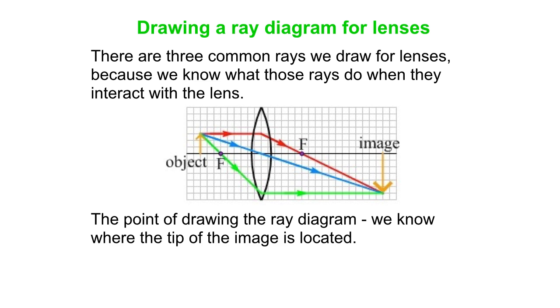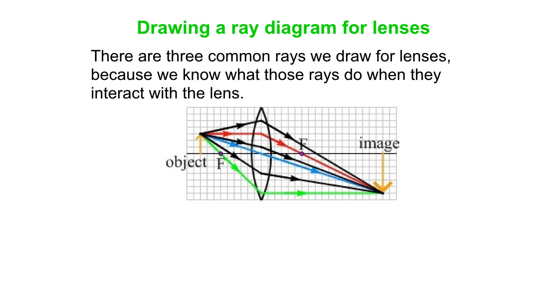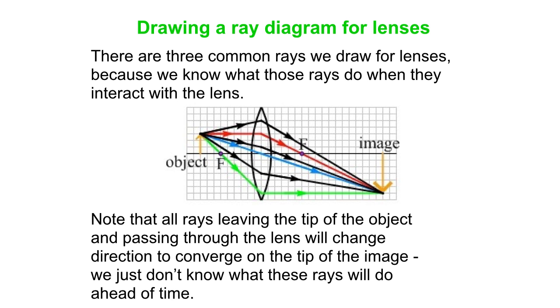So why do we draw a ray diagram? So we know where the image is located. But don't forget that all the rays that leave the tip of the object and pass through the lens will converge on the tip of the image, not just these special ones that are colored. The reason we don't often draw those from the beginning is that we don't always know what those rays will do from the start. But after we know where the image is, then we know exactly what they're going to do as is shown here.